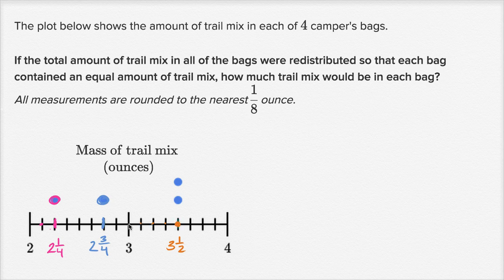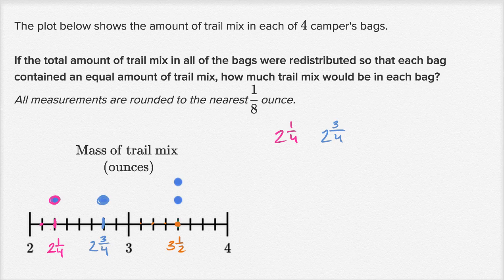You can see that dot is halfway between three and four. So let's list the amount of ounces in each of the bags. You have two and one fourth ounces — that's one of the bags. You have another bag that's two and three fourths ounces. And then you have two bags — remember, there are two bags here, that's what the dot plot does for us — that are three and a half ounces. So three and a half, and three and a half.